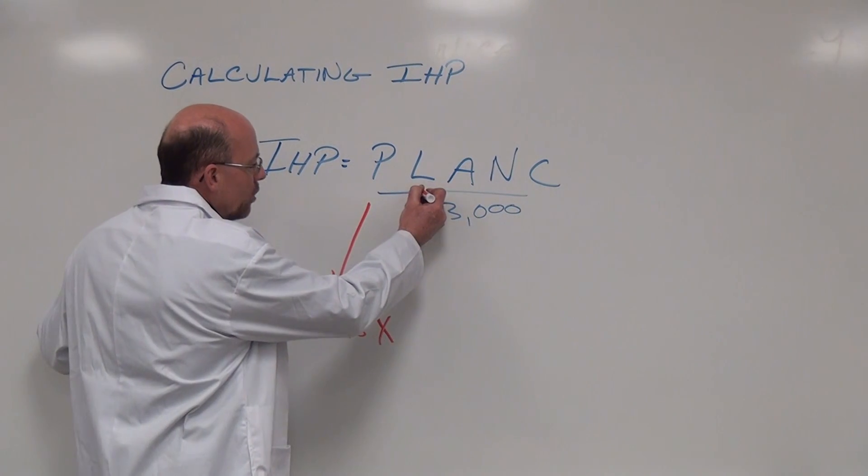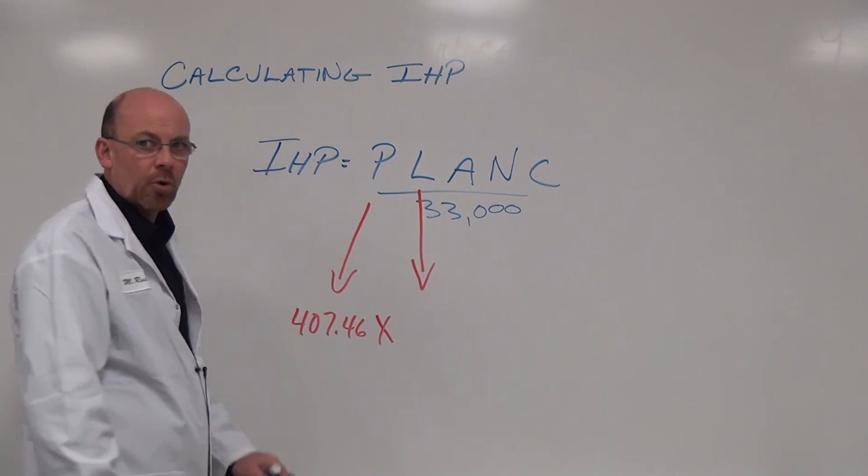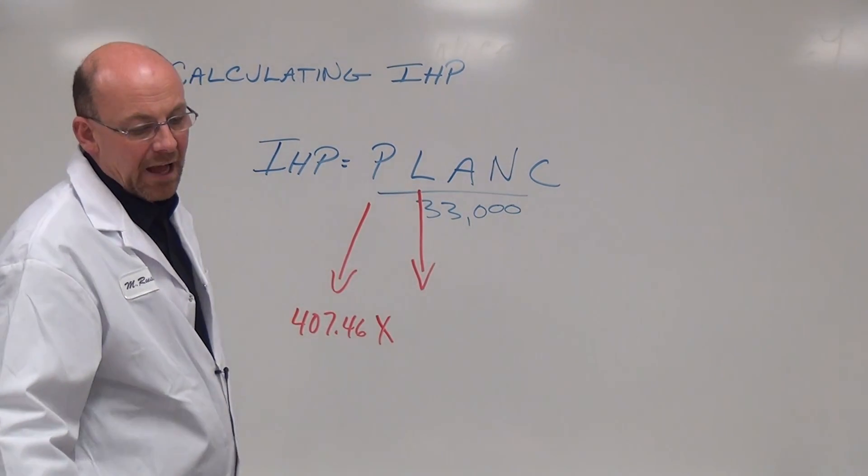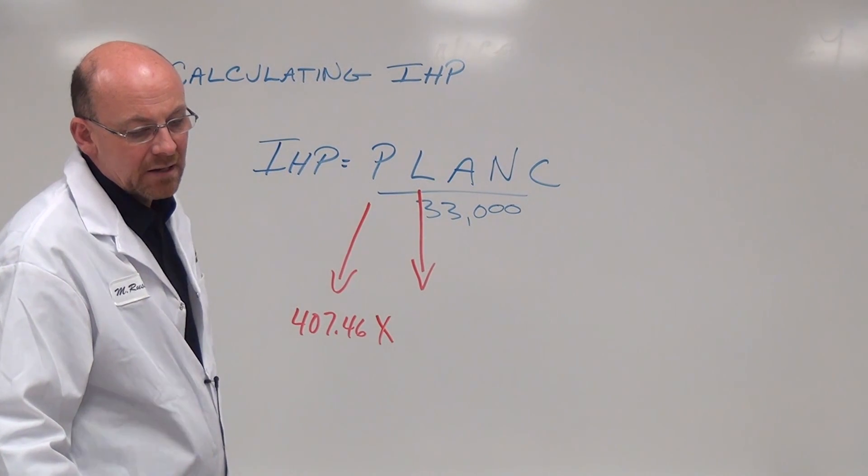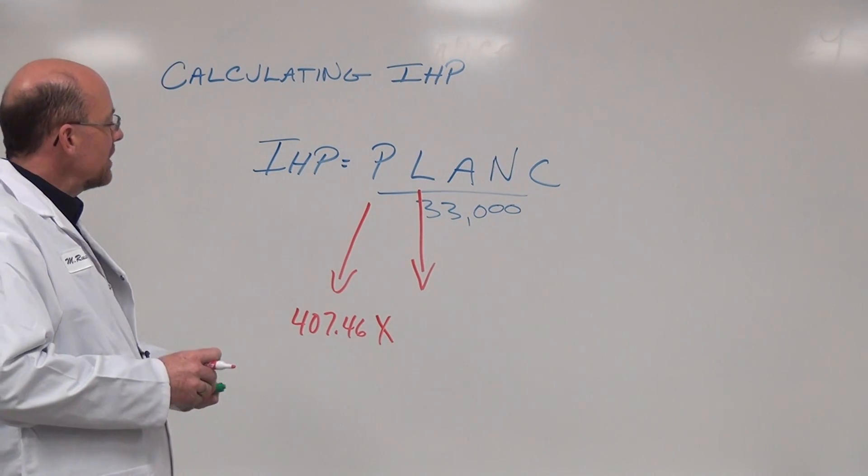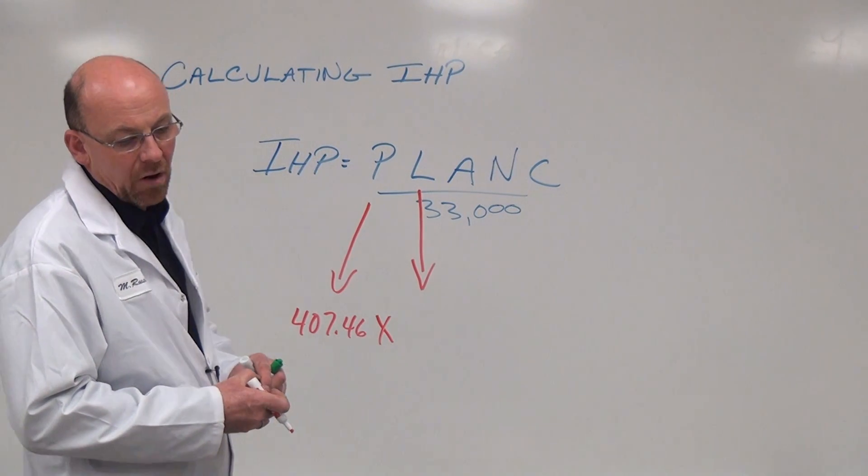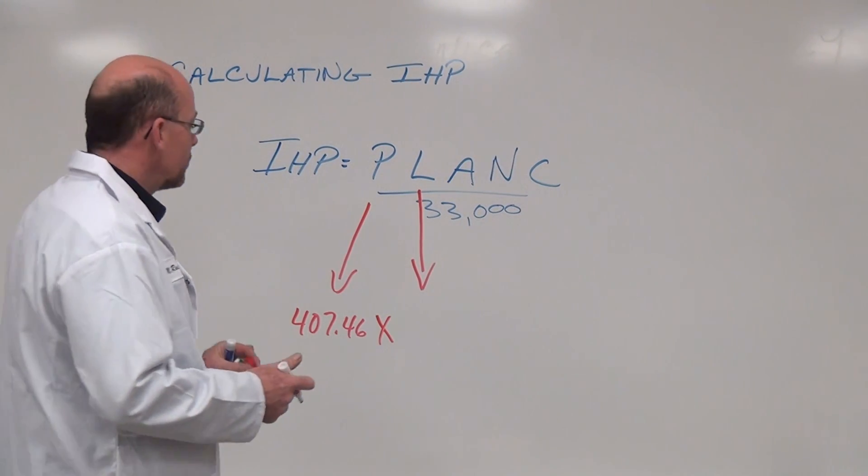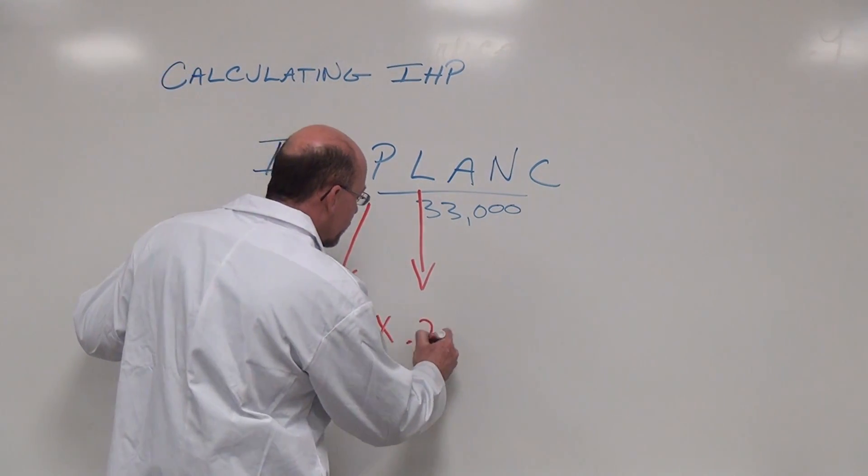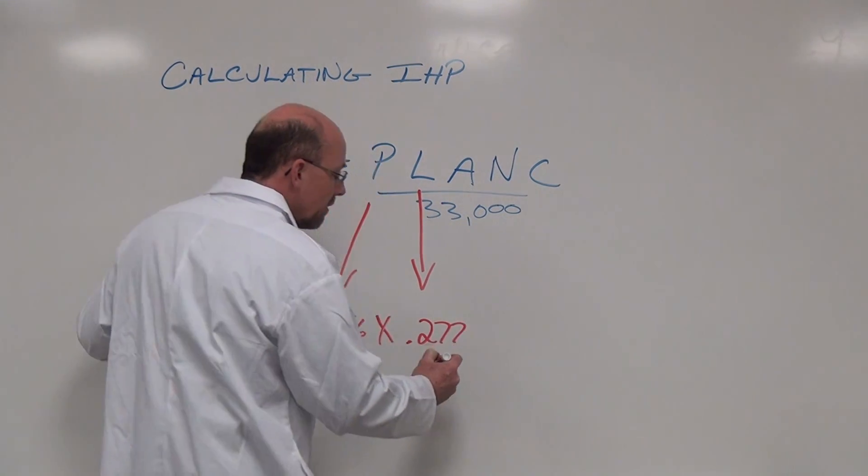The next one we have to take a look at is length in stroke feet. We already established the length in stroke feet was 3.33 inches divided by 12 because that's 1 foot, which equals 0.2775.